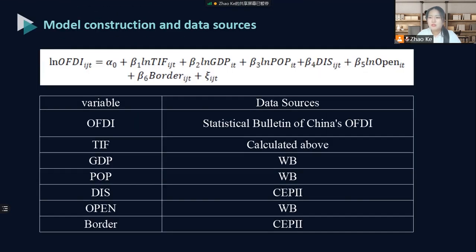Based on the theory of international trade and the actual conditions of the countries along the Belt and Road, an expanded trade gravity model was established to analyze the main factors affecting China's OFDI. The explained variable OFDI represents the stock of China's OFDI in the host country. TIF represents the level of investment facilitation. GDP represents the gross domestic product of the host country. POP represents the population size of the host country. DIS is the distance cost between China and the host country. OPEN is the foreign trade dependence of the host country. BORDER is a dummy variable — set to 1 when the two countries share a common border, and 0 otherwise.